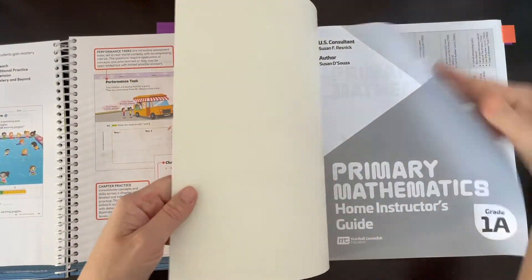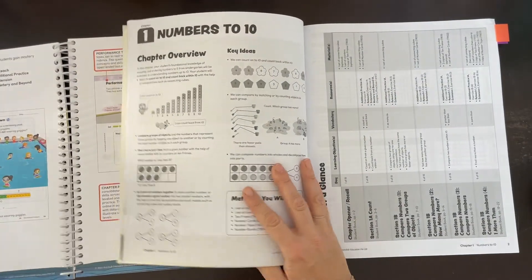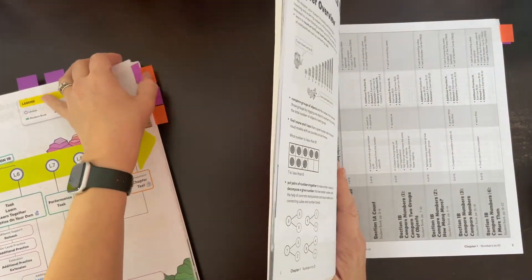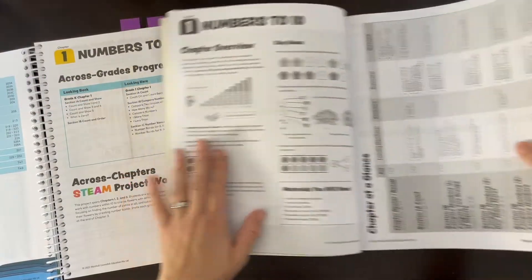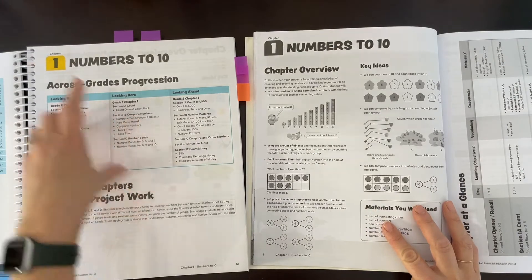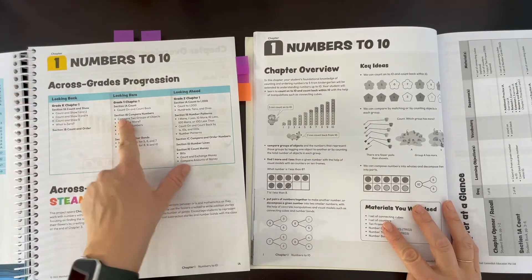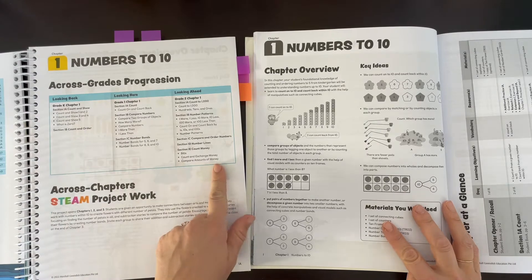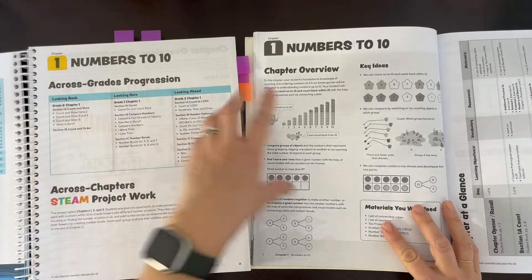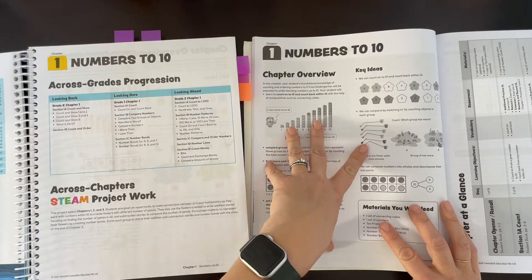Let's look at a lesson. We'll start at the biggest difference, right at chapter one. In the teacher guide, we have this nice across-grade progression so you can see the spiraling that's happening, and an introduction to the STEAM project work. The home instructor's guide just jumps right into the lesson—we do not have this progression in the home instructor's guide.